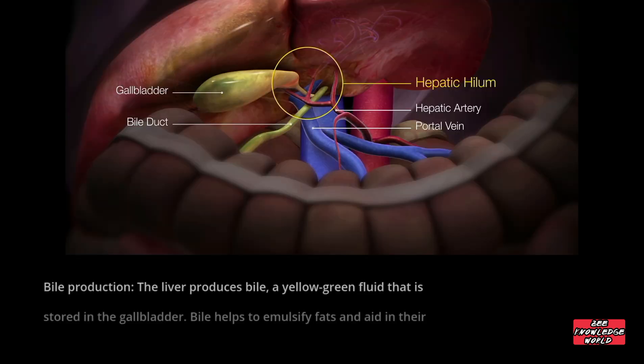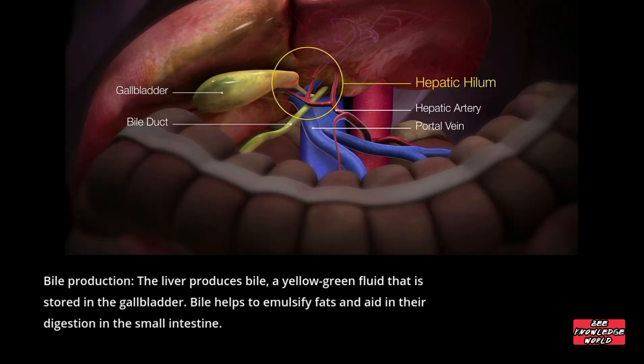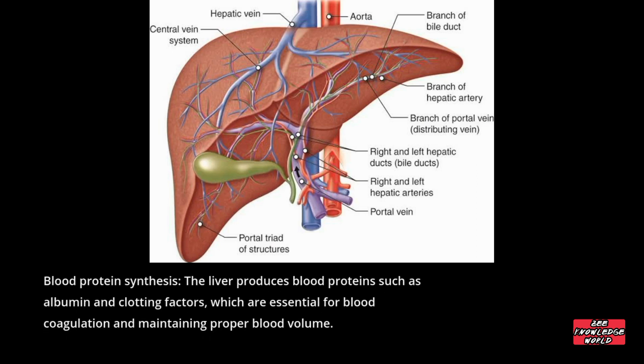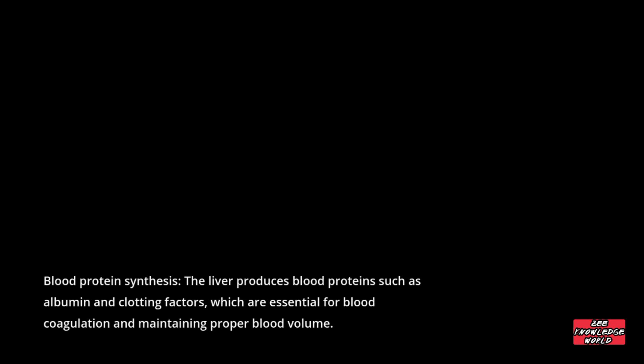Bile production: the liver produces bile, a yellow-green fluid stored in the gallbladder. Bile helps to emulsify fats and aid in their digestion in the small intestine. Blood protein synthesis: the liver produces blood proteins such as albumin and clotting factors, which are essential for blood coagulation and maintaining proper blood volume.